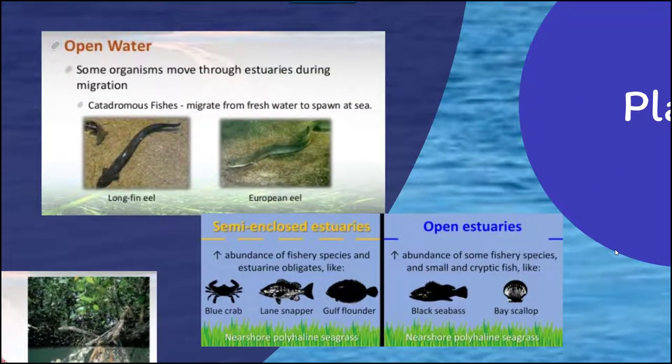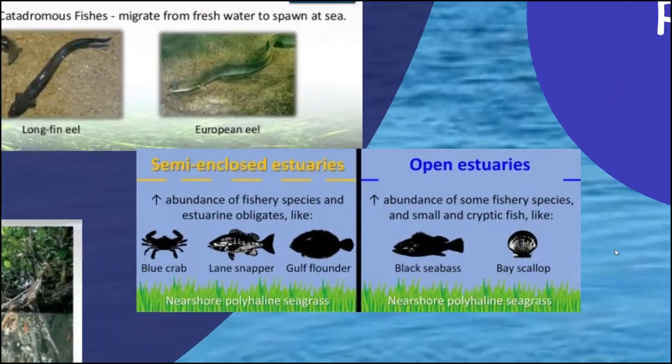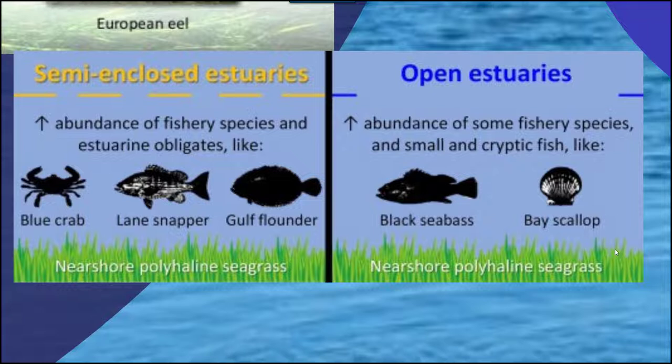Within the open water regions of an estuary, we often find catadromous fishes — fish that migrate from freshwater to spawn in the sea. Examples include the longfin eel, the European eel, and salmon. In a semi-enclosed estuary, there's access to seawater but regions that protect from wave action with smaller entrances. In those estuaries there's an increased abundance of species such as blue crabs, snappers, and gulf flounders. In open estuaries without that barrier, you find greater abundance of bay scallops and black sea bass.